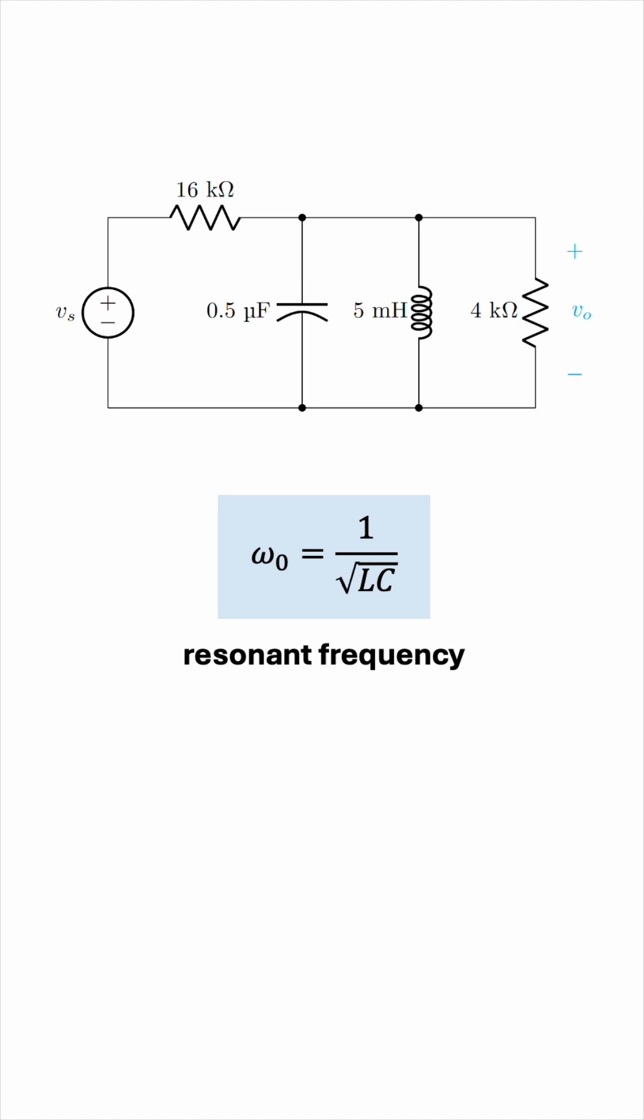The question wants the frequency in kHz, not in radians per second, so let's find the resonant frequency F0, simply by dividing this omega 0 by 2 pi. This will give us 1 over 2 pi radical LC.